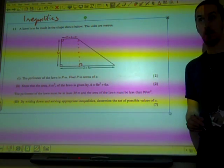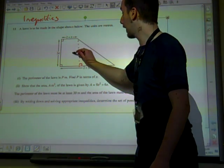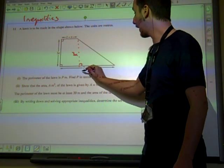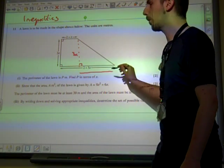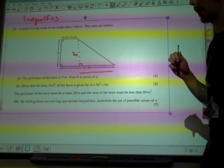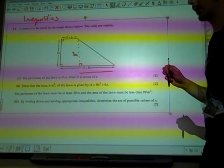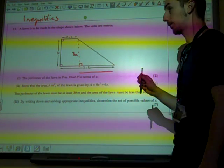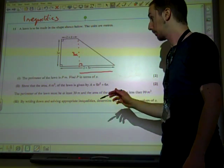We know two sides of the right-angled triangle. We know that side there is 3X, and we know that side there, well what would that side be? It would be 4X. Why would it be 4X? Because that's 2 plus X.